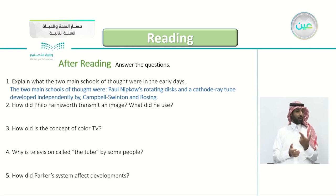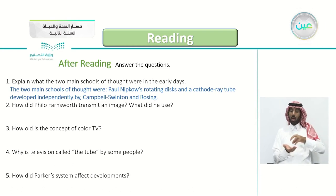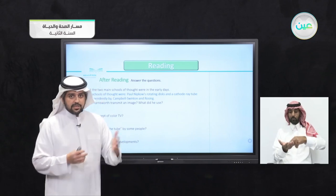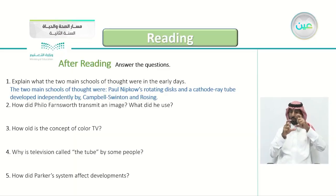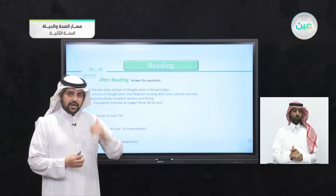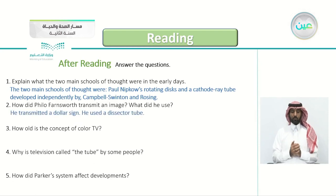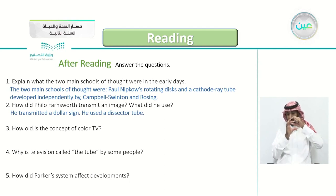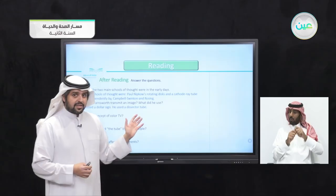Question two: how did Philo Farnsworth transmit an image? What did he use? This was of course revolutionary at the time. The answer: he transmitted a dollar sign — the S with two lines through the middle — using the dissector tube.